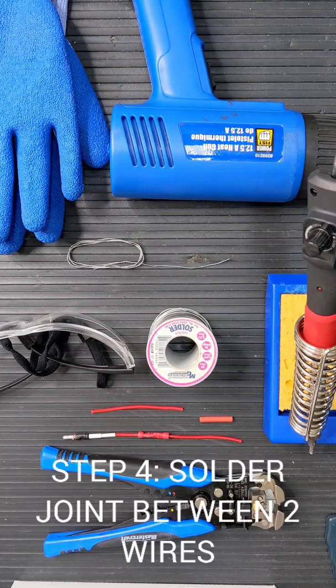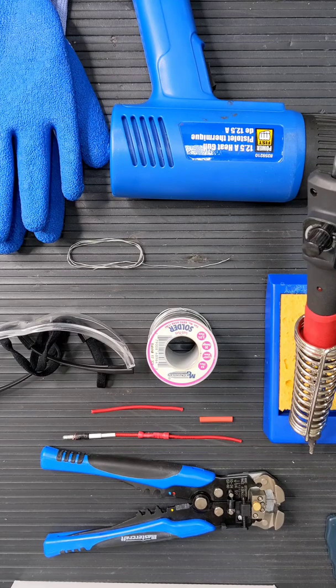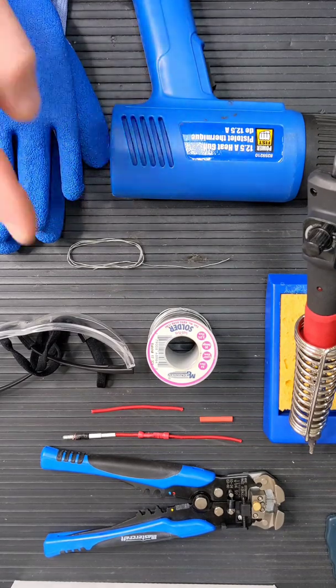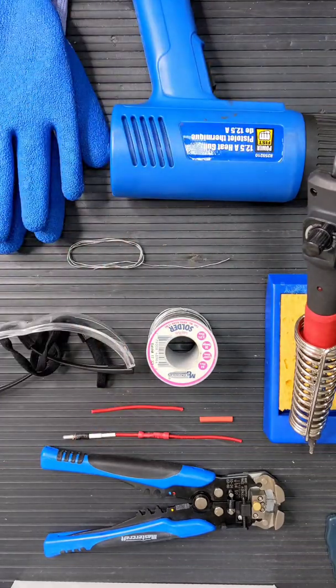So the next step on the hands-on exercises, number four, is solder joint between two wires. We'll be soldering those wires, the connector you previously made to this extra strand that's in your kit, as well as heat shrinking.